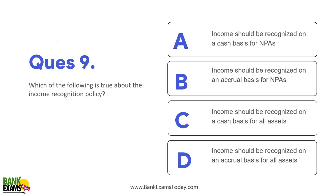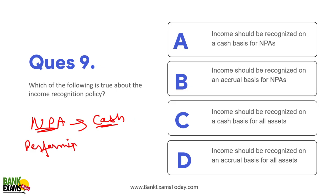Which of the following is true about the income recognition policy? In case of an NPA asset, income is recognized only when cash actually arrives — that is the cash basis. For a performing asset where EMIs are coming in regularly, income is recognized on the accrual basis — meaning if the EMI is due on the 1st of every month, it is recognized as income on the 1st of every month.